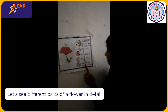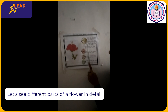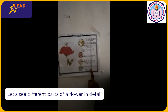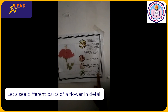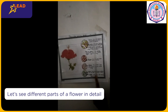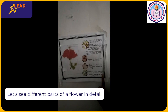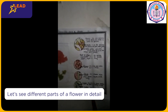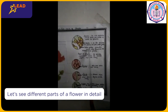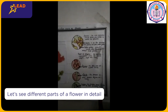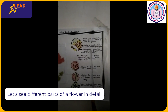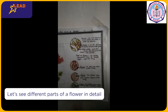This globe-like part is called the anther, a sac-like structure that produces and stores pollen grains. And this line-like structure is called pollen grains — granule round stick structures that contain male gametes.